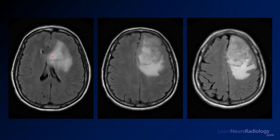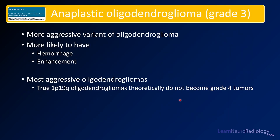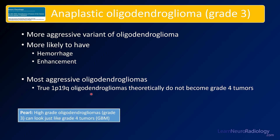On FLAIR: ill-defined margins, lots of mass effect, areas that are very hyper-intense down to those just a little bit hyper-intense to gray matter — a lot of heterogeneity. On pre- and post-contrast, there's lots of heterogeneous enhancement with ill-defined margins, patchy enhancement, and peripheral enhancement around the rim of the cystic area with the fluid level — lots of ugly-looking enhancement. When we see this, we're thinking it's a high-grade lesion. This is a case of anaplastic oligodendroglioma. These are the more aggressive oligodendrogliomas, more likely to have hemorrhage and enhancement. The true 1p19q-codeleted oligodendrogliomas theoretically don't become grade 4 tumors, but high-grade oligodendrogliomas like this one can look just like grade 4 tumors. So on your differential, you're probably just suggesting this is a high-grade glioma — this one just turned out to be an anaplastic oligodendroglioma.